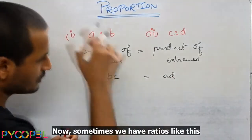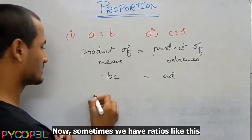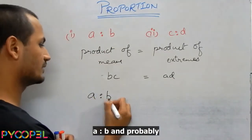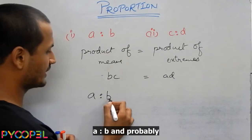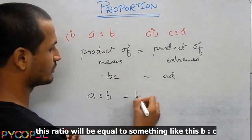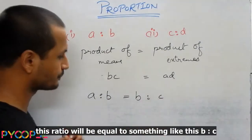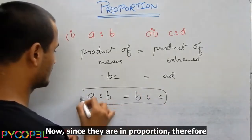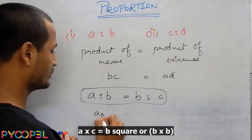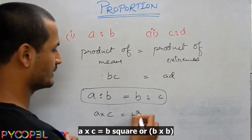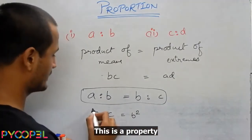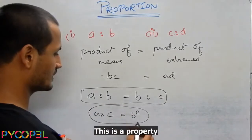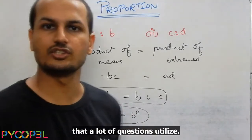Now sometimes we have ratios like this. A is to B and this ratio will be equal to something like B is to C. Now since they are in proportion, therefore A into C is equal to B square, B into B. This is a property that a lot of questions utilize.